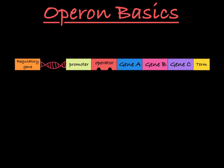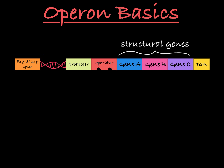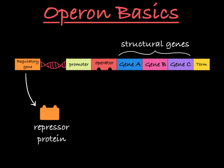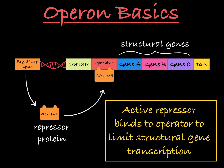Let's remind ourselves what an operon is. This is your typical operon structure, which you'll find in prokaryotes like E. coli. You have a regulatory gene here, distant from a series of structural genes that share a promoter, operator, and termination sequence. The regulatory gene will encode a repressor, which, when active, will bind to the operator to limit transcription of the structural genes.